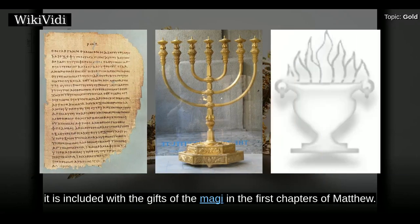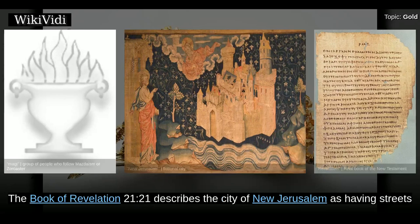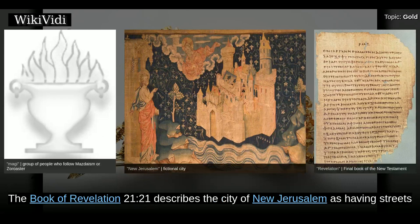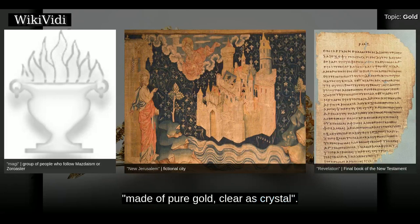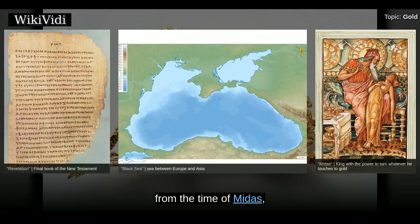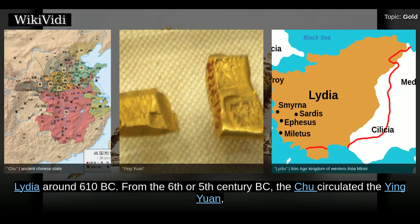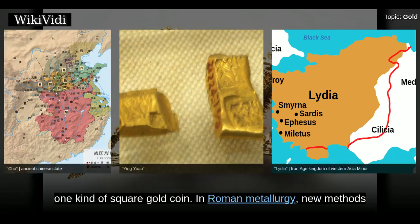In the New Testament, gold is included with the gifts of the Magi in the first chapters of Matthew. The book of Revelation chapter 21 verse 21 describes the city of New Jerusalem as having streets made of pure gold, clear as crystal. Exploitation of gold in the southeast corner of the Black Sea is set to date from the time of Midas, and this gold was important in the establishment of what is probably the world's earliest coinage in Lydia around 610 BC. From the 6th to 5th century BC, the Chu circulated the ying yuan, one kind of square gold coin.